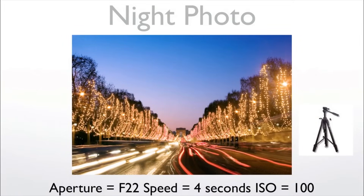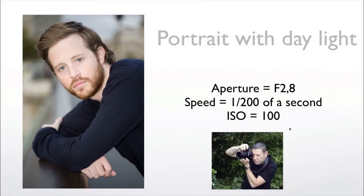For a long exposure on the Champs-Élysées in Paris, I used a tripod and went all the way to F22 to force a long exposure. The camera said it needed 4 seconds at F22, ISO 100. The passing cars made streaks of light and I loved that. For a portrait, I used a lens that opens to F2.8 — the biggest aperture I could have. I wanted the background blurry and the subject in focus, so F2.8 at 1/200 of a second, ISO 100. That's a common setting for daytime portraits.